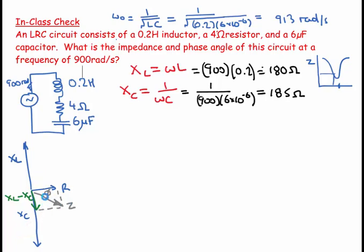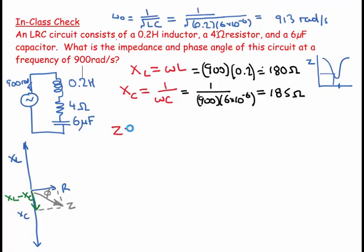You can't add impedances arithmetically — you must add them as vectors, which we call a phasor relationship. The impedance Z equals the square root of R squared plus the quantity XL minus XC, all squared.